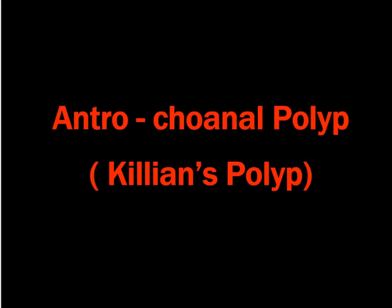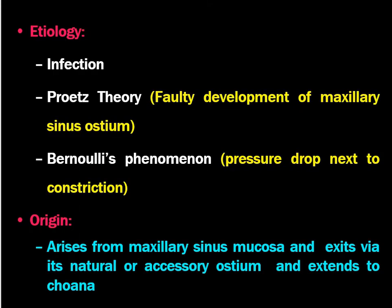Coming to antrochoanal polyp, also called Killian's polyp. The etiology of Killian's polyp is infection because it is commonly found in the maxillary sinus. The antrochoanal polyp arises from the maxillary antrum and goes to the choana. Prohe's theory describes faulty development of the maxillary sinus ostium. The Bernoulli phenomenon describes pressure drop next to constriction. Therefore when there is pressure drop next to the internal nasal valve, the mucosa can be sucked out from the maxillary sinus and might form the antrochoanal polyp.